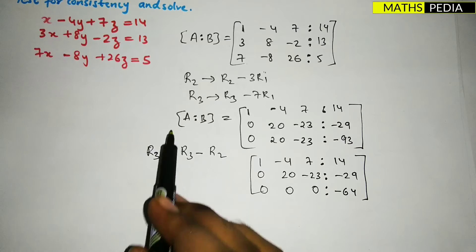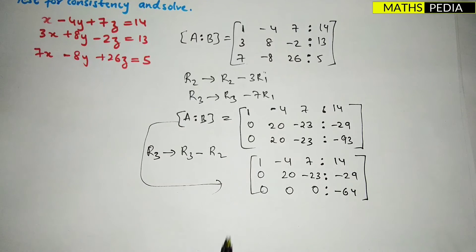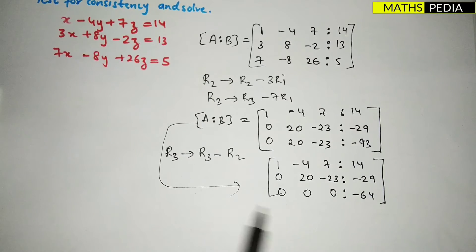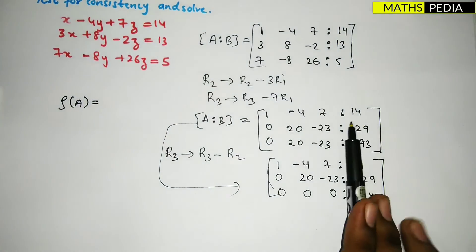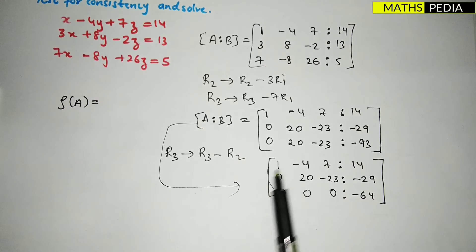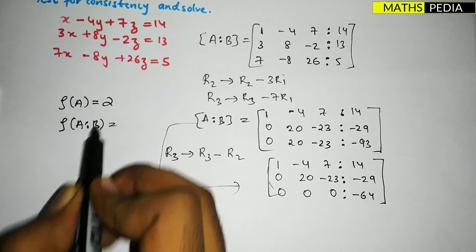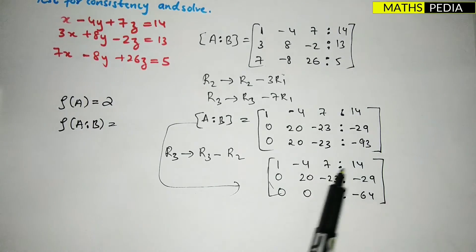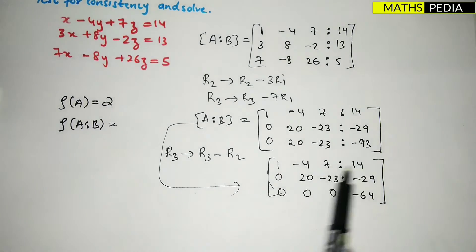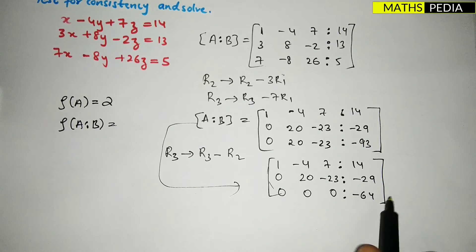Now you have to check the rank of each. Rank of A means this part only, leave this part. Rank means the number of non-zero rows. How many non-zero rows are there? Two. So it is two.